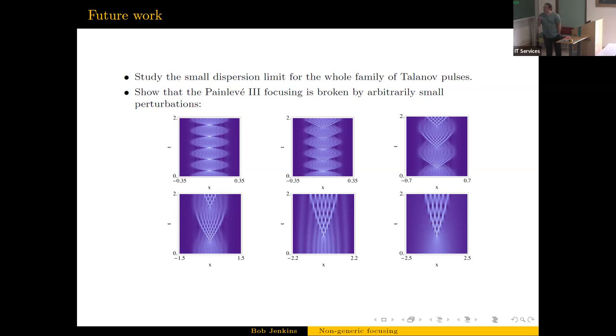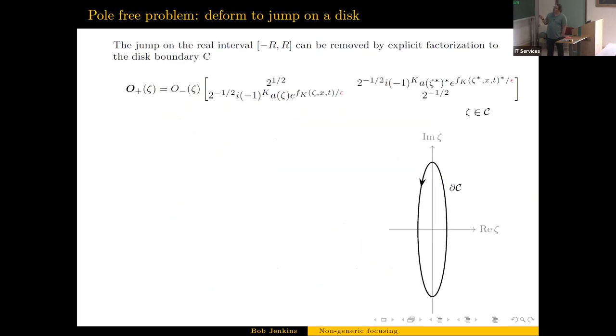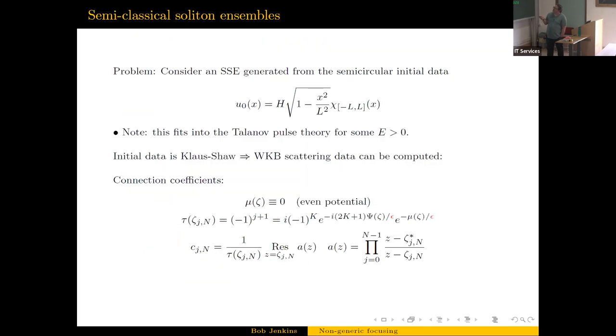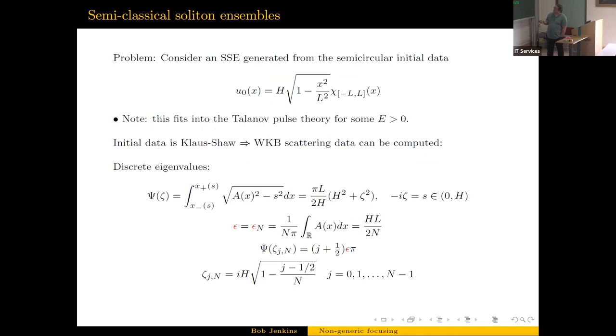So something I think might be interesting is, all of this works because, the way I think about it anyway, this phase function was quadratic. So you can imagine if you could cook up some initial data where you got a cubic term, then maybe this would all work for the mkdV flow, the third flow of the NLS hierarchy. So maybe you could do this for other problems. Or is there an analog of this for KdV - maybe some way to get a non-generic result for KdV. Anyway, that's just a total thought experiment at this point. So that's it. Thanks very much.